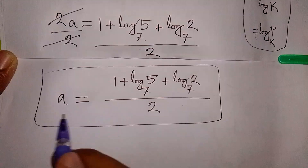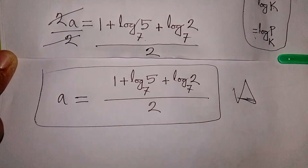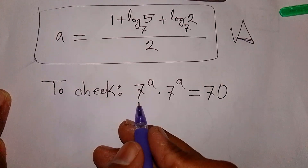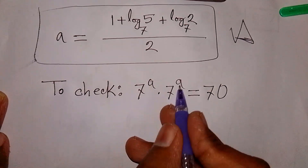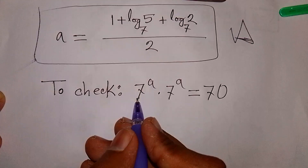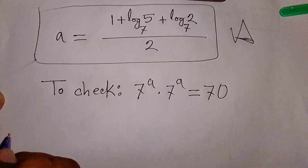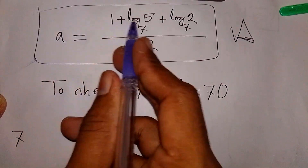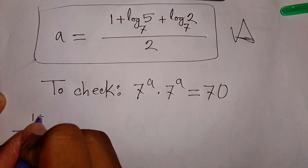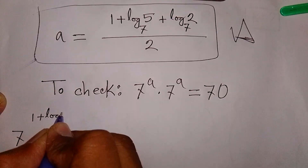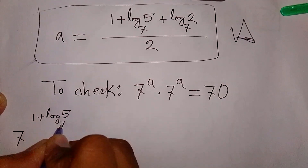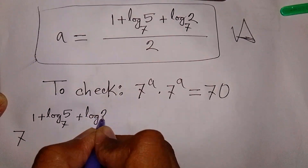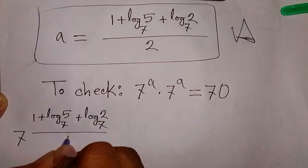So this is our final answer: a equals 1 plus log 5 base 7 plus log 2 base 7, over 2. Now let's check the equation. To verify, we substitute back: 7 power a times 7 power a equals 70, where the value of a is 1 plus log 5 base 7 plus log 2 base 7 over 2.